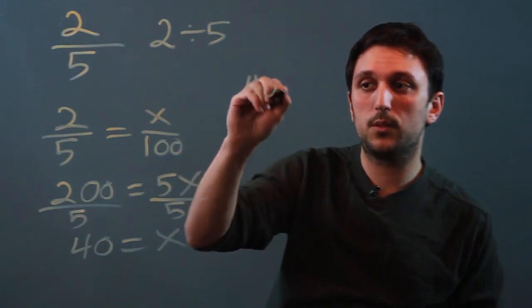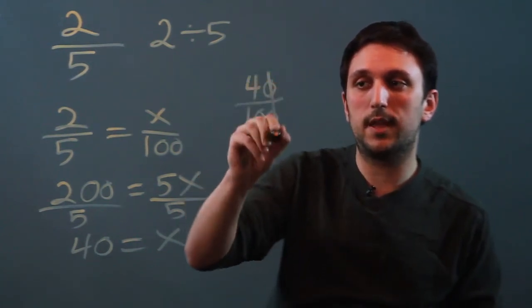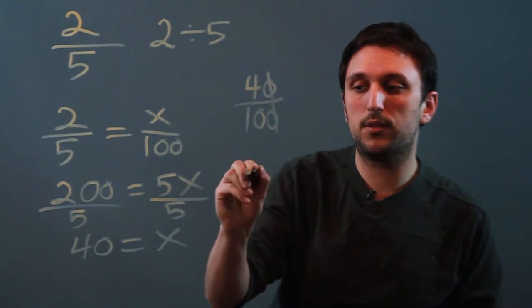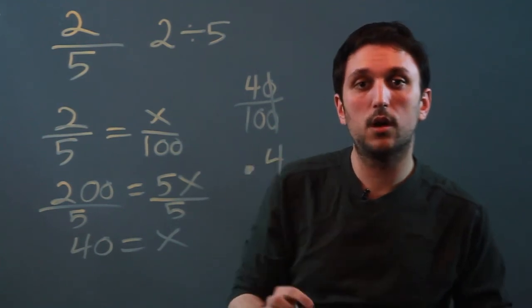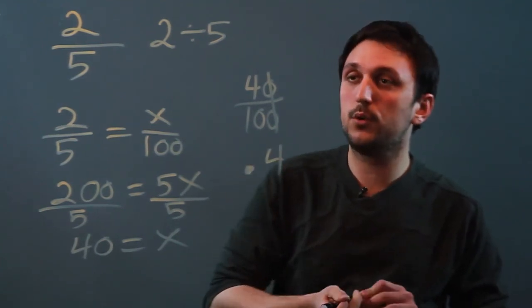So 40 over 100 is like saying 4 tenths, and 4 tenths is 0.4. So that is how we would solve 2 divided by 5.